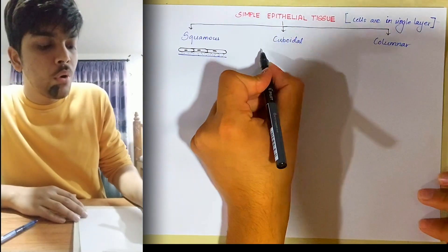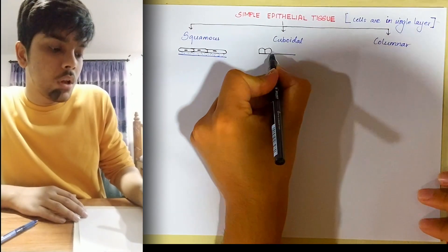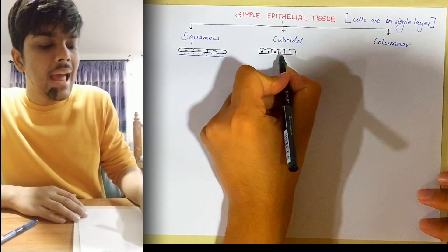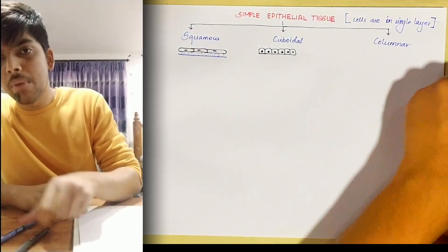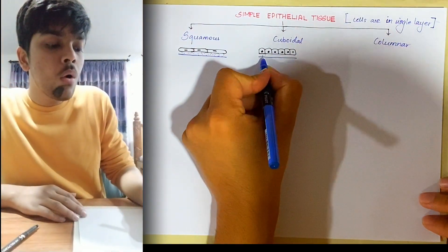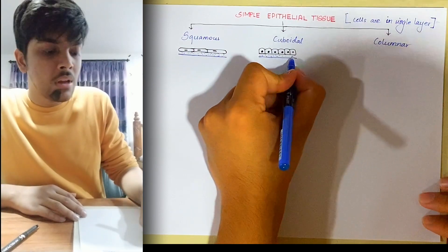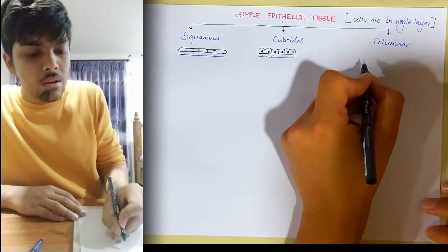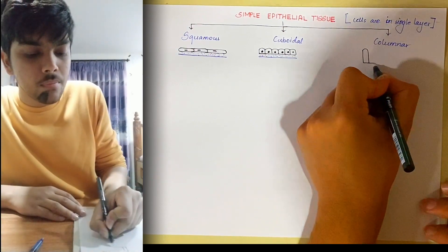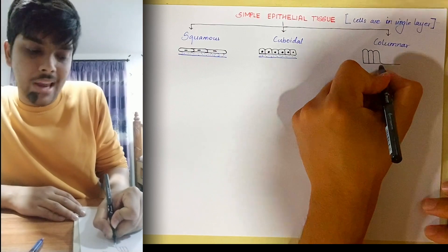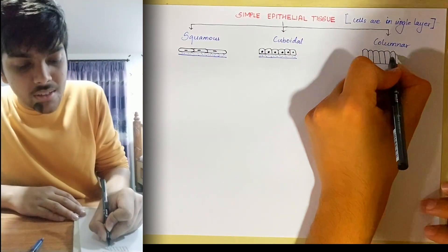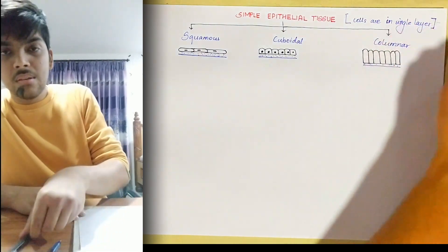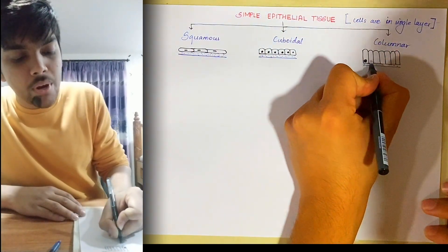Similarly, you have simple cuboidal epithelium where the cells are cuboidal — cube-like in shape — and they are also present on a basement membrane. The significance of the basement membrane is to allow oxygen and nutrition to diffuse through so that the epithelial cells, which are avascular, can receive them. Thirdly, you have simple columnar epithelium, which consists of columnar cells also present on a basement membrane; these columnar cells have a round nucleus present at the base.